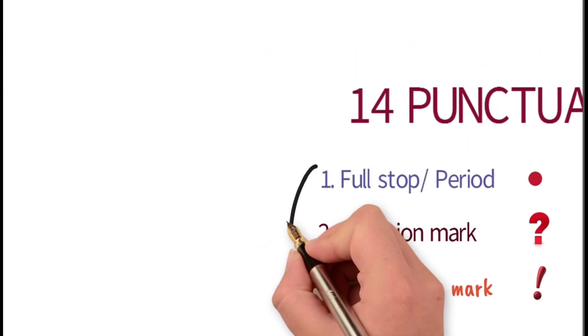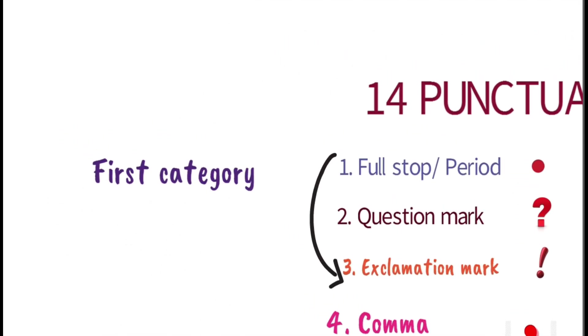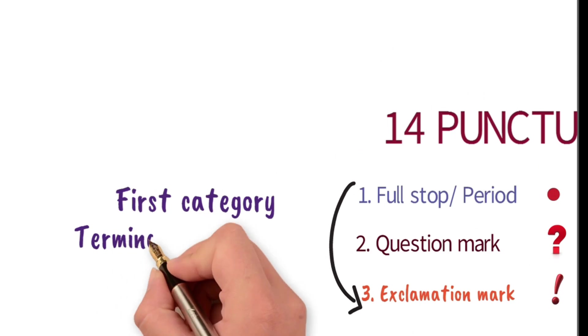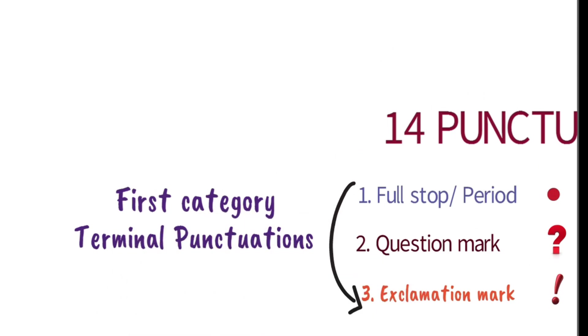The first three symbols or punctuation marks on this list: the full stop, the question mark or the exclamation mark. These have been placed in the first category and that is known as the terminal punctuation marks. Because they are used at the end of a sentence. So they terminate, they end that sentence. That's why they are known as terminal punctuation marks.